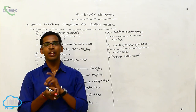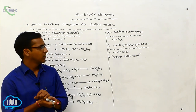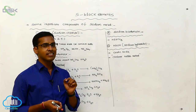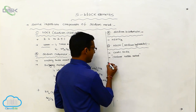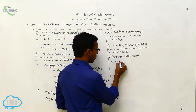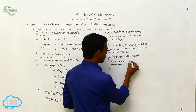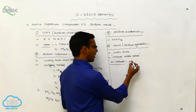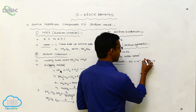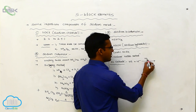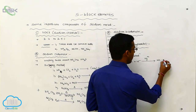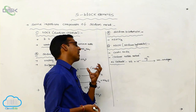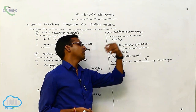Chlorine gas is liberated at the anode electrode because chlorine is negatively charged. Mercury acts as the cathode and carbon as the anode. At the cathode, reduction takes place — meaning gain of electrons. In the presence of mercury, sodium gains electrons and forms sodium amalgam.